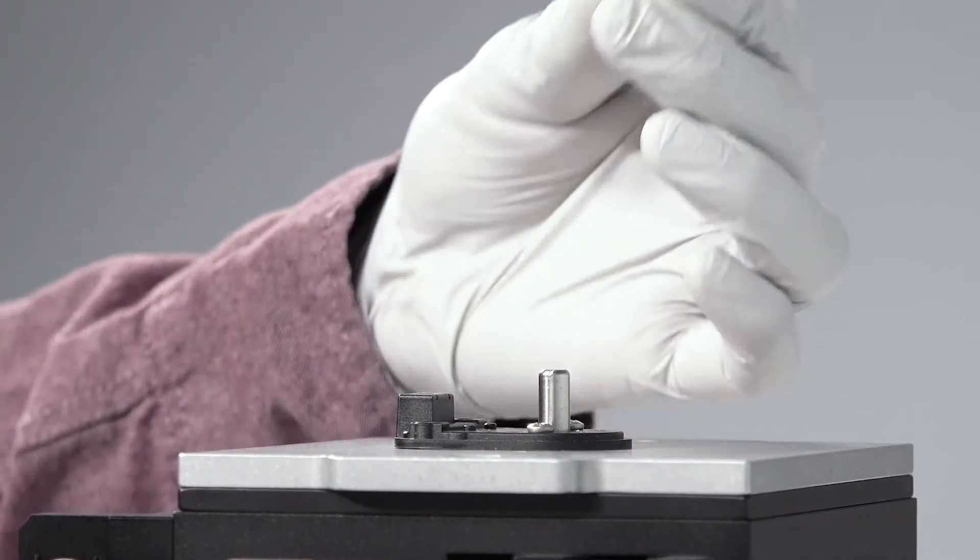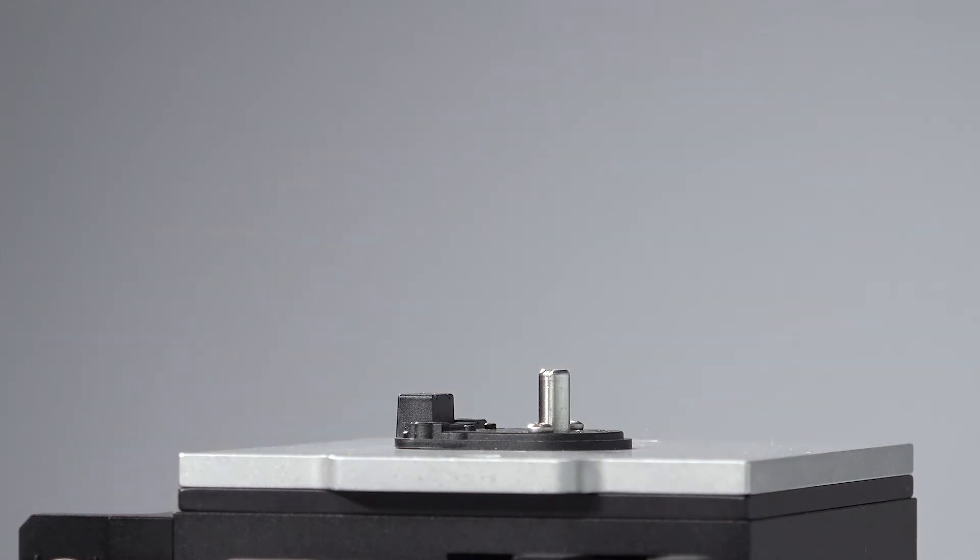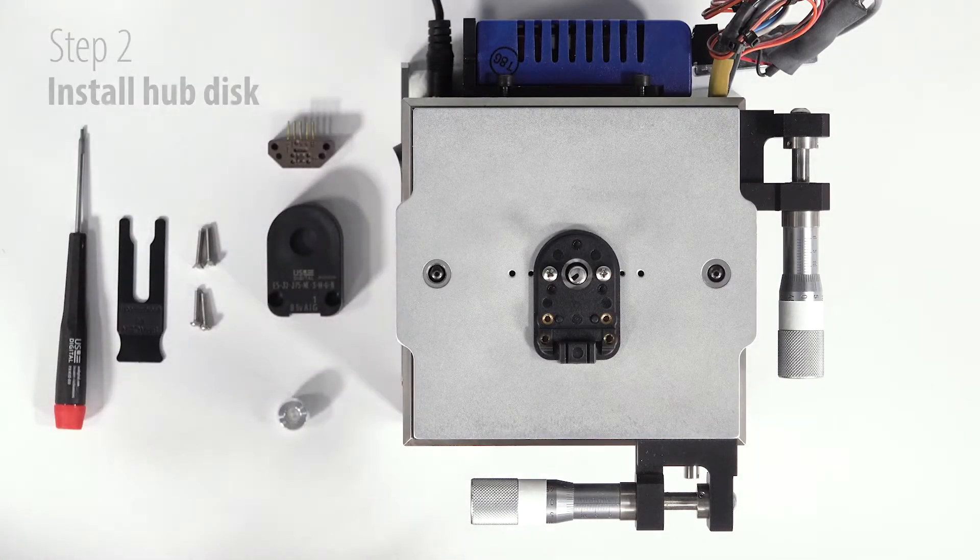The centering tool can then be removed and used for later installations. In step two, we'll be installing the hub disk assembly.